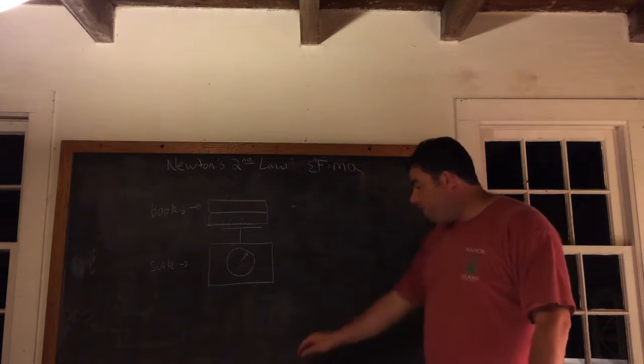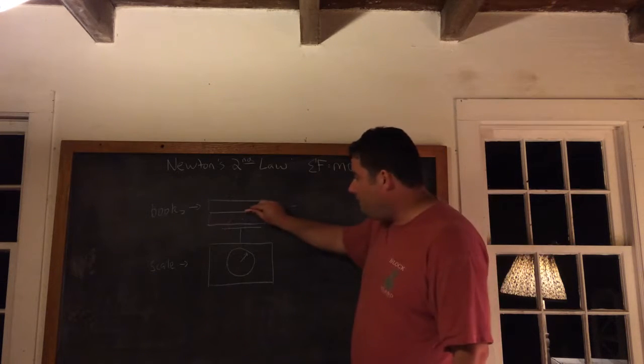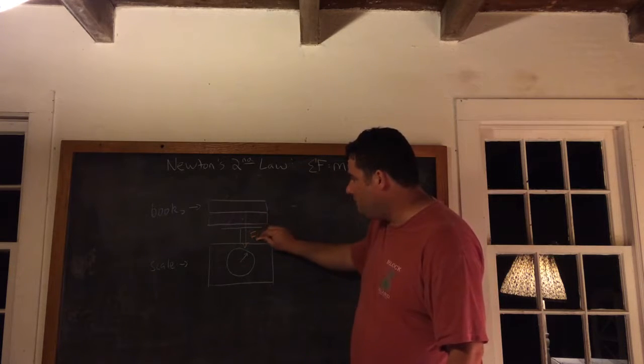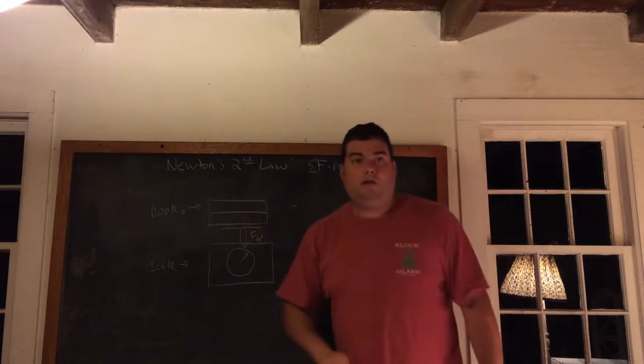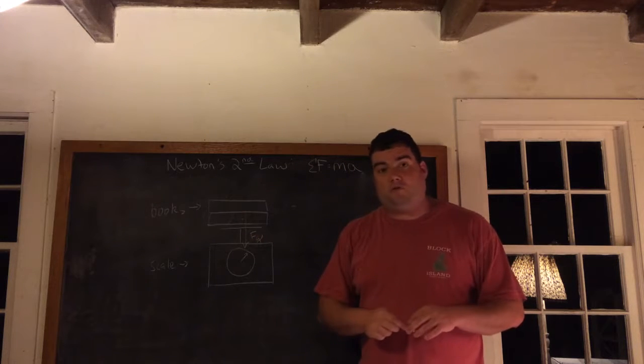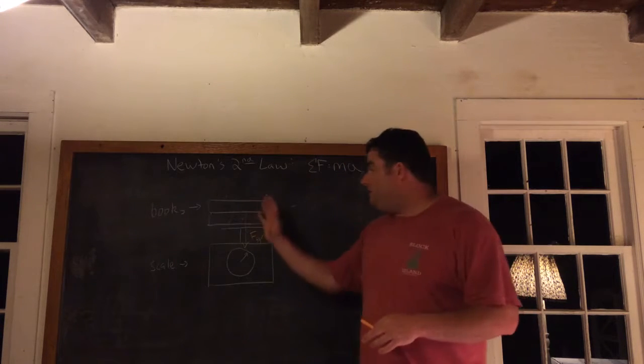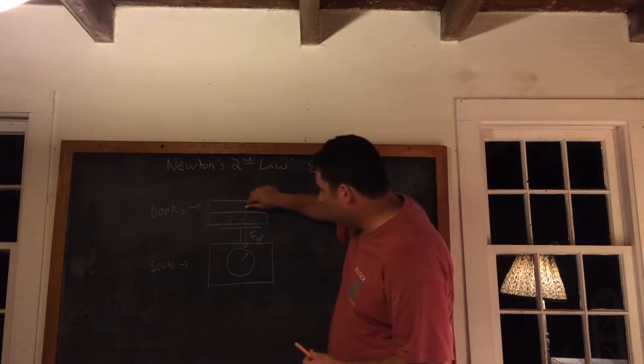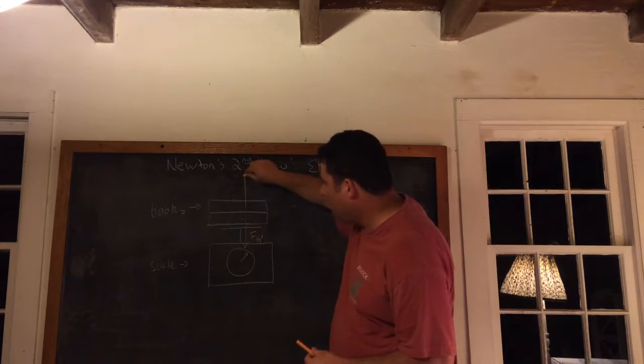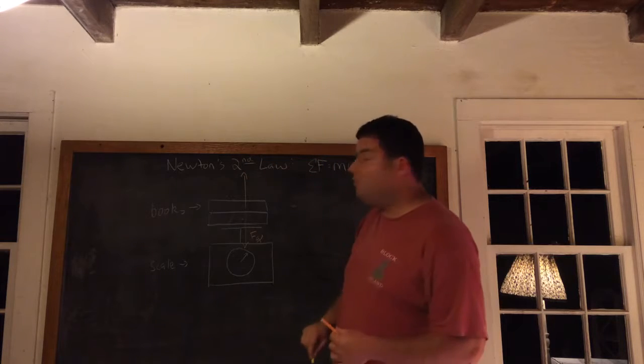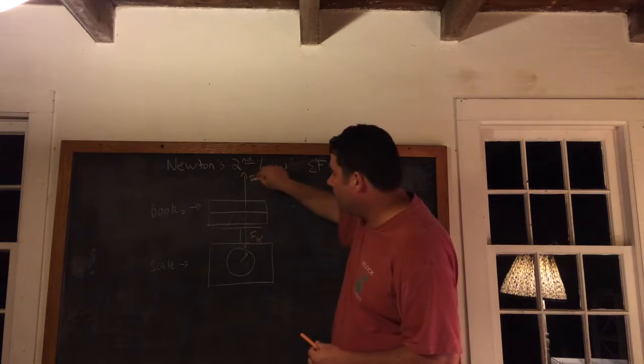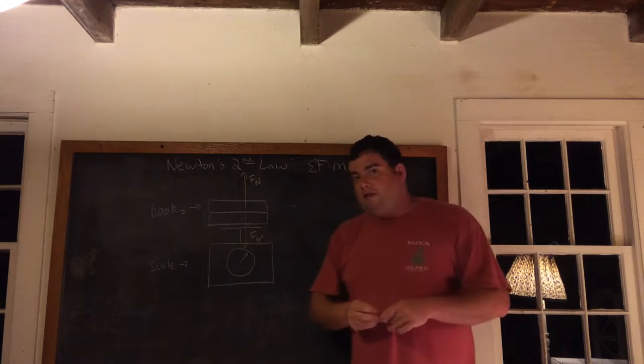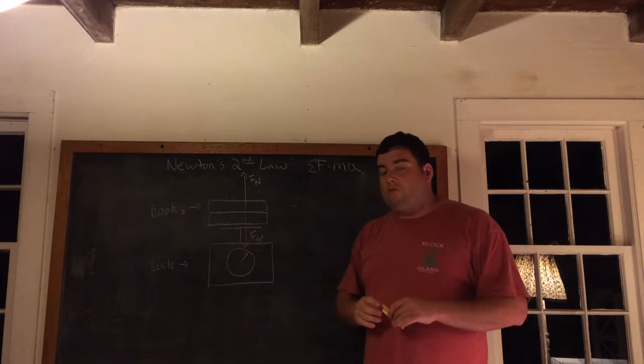So the obvious force, of course, is that gravity is acting in the downward direction, and it tends to accelerate those books towards the center of the Earth. That doesn't happen because the scale and the ground is able to push back. We call that a normal force. And to figure out what's going on, we've got to think about the interaction between these two forces.